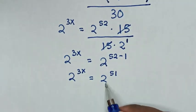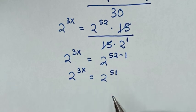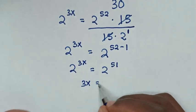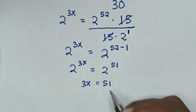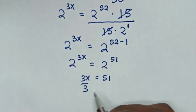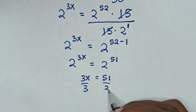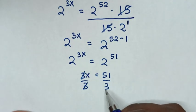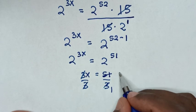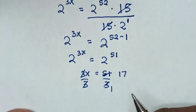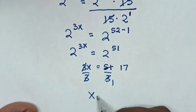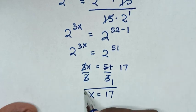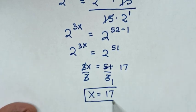So 3x is equal to 51. Then we divide by 3 on both sides, so 3 and 3 will cancel, and 51 divided by 3 is 17. Therefore x is equal to 17, so this is the final answer for the value of x.